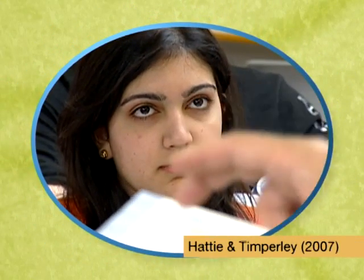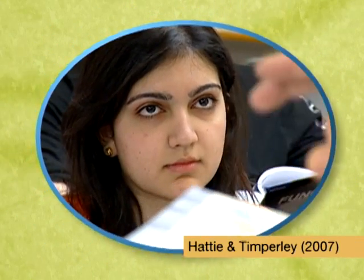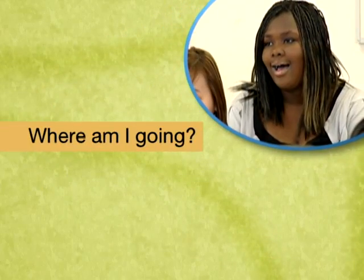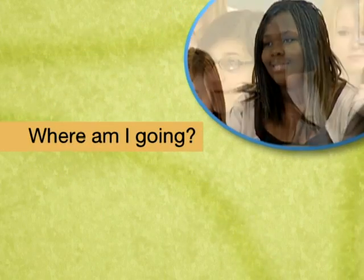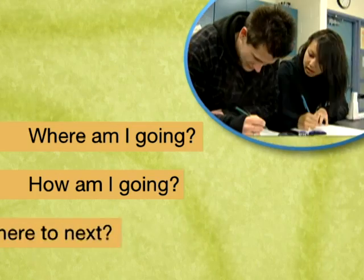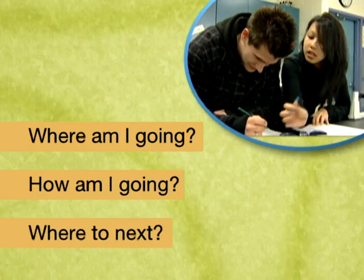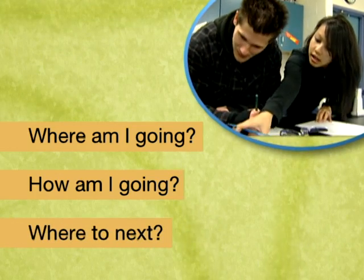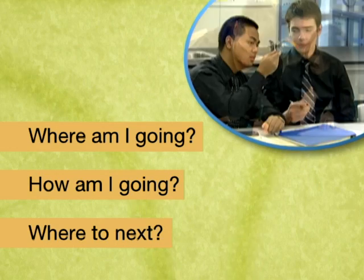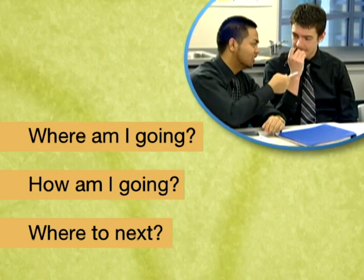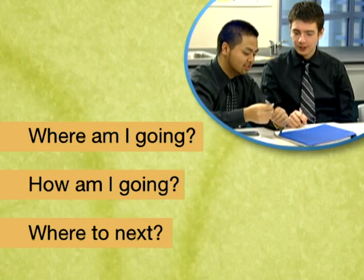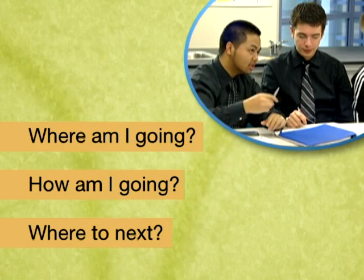Hattie and Timperly identify three questions that guide learning: Where am I going? How am I going? And where to next? These questions also focus students' thinking on learning how to learn by drawing their attention to specific steps in the learning process.